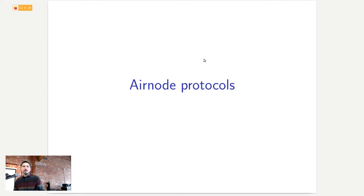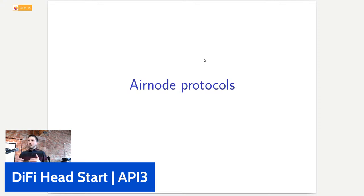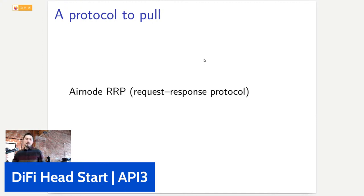The oracle problem is actually the API connectivity problem — what you want from oracles is to integrate APIs to smart contracts. An oracle protocol should simulate what an API protocol does for traditional web. There are two main traditional API architectures: push and pull. We have one push and one pull protocol to cover all use cases. The first protocol is Airnode RRP, the request-response protocol, where you ask a question to an oracle and it responds as soon as possible — this is a pull mechanism, similar to a REST API HTTP request.